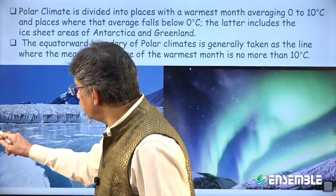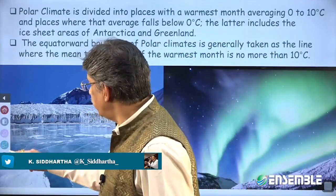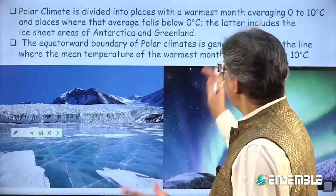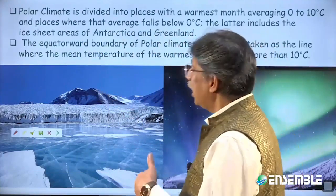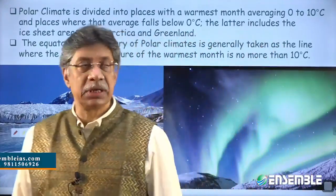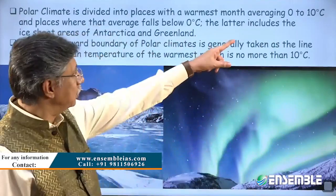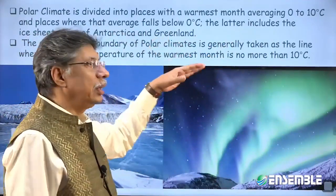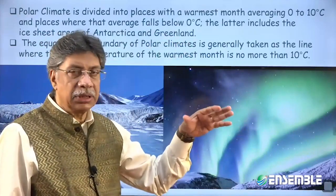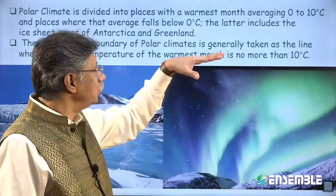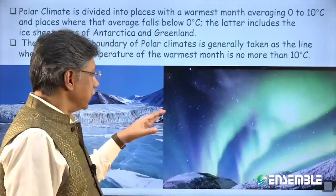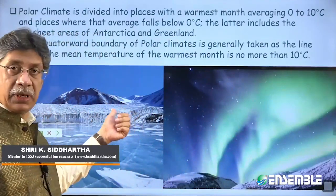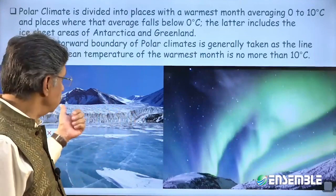The climate found in the polar region is completely different. It is divided into places where the warmest month averages about 0°C, and places with 0 to 10°C. All places in the polar areas have temperature conditions where the temperature is at or near 0°C.